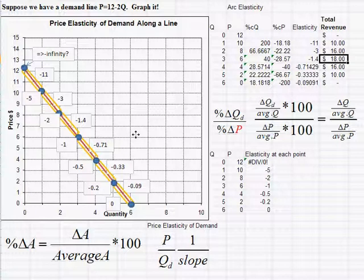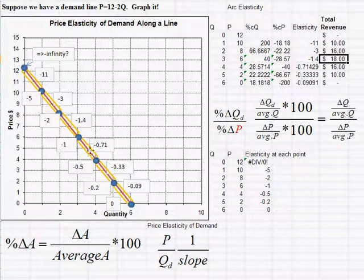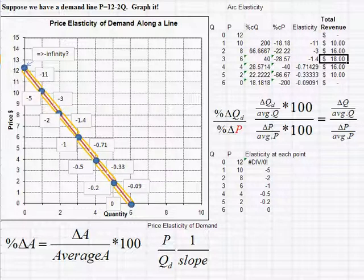Why is that the case intuitively? When demand is inelastic, we can raise the price more than the quantity falls — a big percentage increase in price, but a smaller percentage decrease in quantity. So total revenue, p times q, increases. But when demand is elastic, if I raise my price a little, the quantity goes down even more, so total revenue falls. That's why total revenue is maximized exactly at the point of unit elasticity.